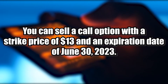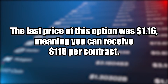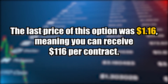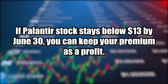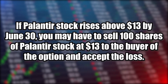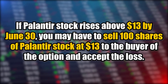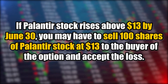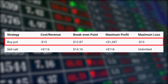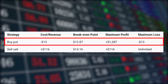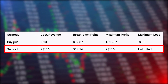Alternatively, you can sell a call option with a strike price of $13 and an expiration date of June 30th, 2023. The last price of this option was $1.16, meaning you can receive $116 per contract. If Palantir stock stays below $13 by June 30th, you keep your premium as profit. If it rises above $13, you may have to sell 100 shares at $13 to the buyer and accept the loss. A summary table shows that buying a put option gives you limited downside potential but a higher break-even point and higher maximum loss, while selling a call option gives you unlimited downside potential but a lower break-even point and lower maximum loss.